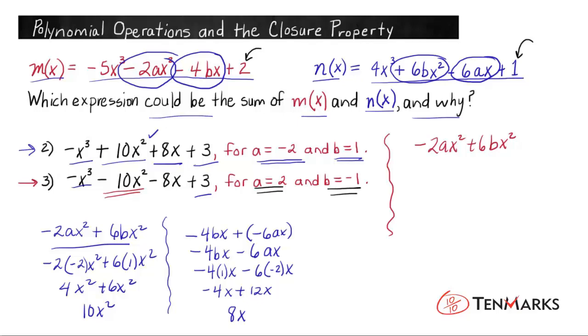So we'll let a = 2, and that'll give us -2 times 2x² plus 6 times b = -1 in this case, so -1x². When we simplify this, that gives us -4x² - 6x², which does give us -10x². So the quadratic term for option 3 works.